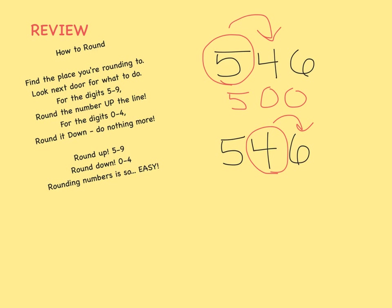Well, 6 is between 5 and 9, so I know I'm going to round the 4 up to a 5. Everything to the right becomes a 0. Everything to the left stays the same. 546 rounds up to 550 when rounded to the nearest tens place.